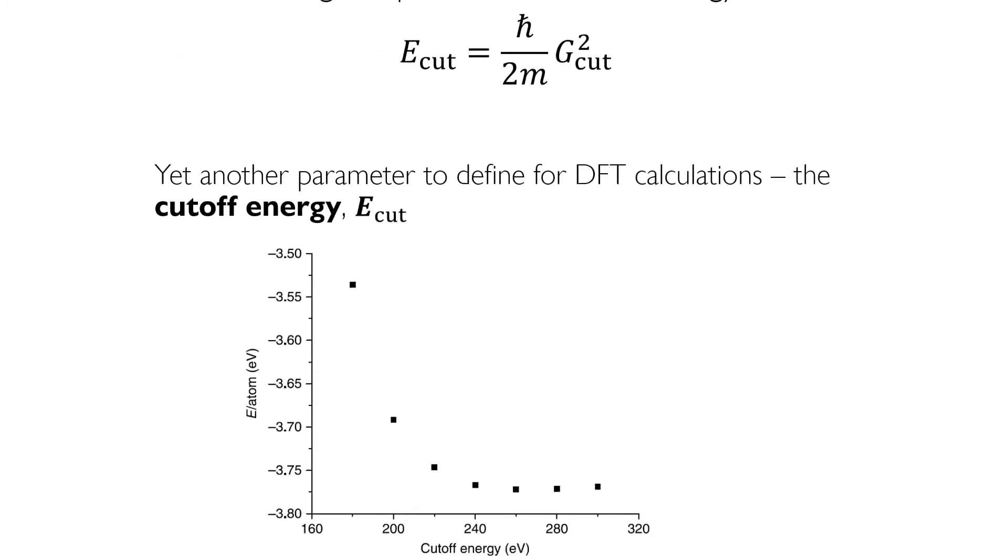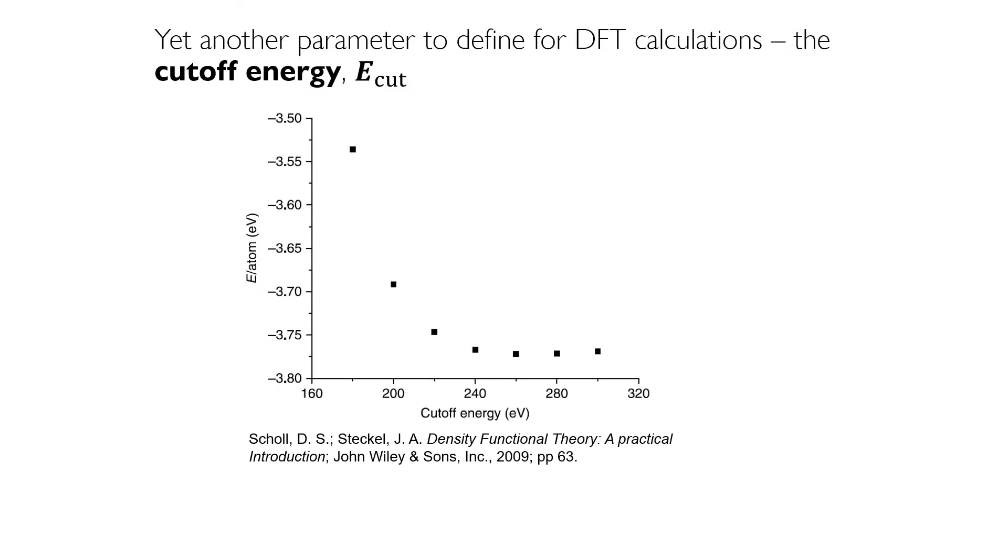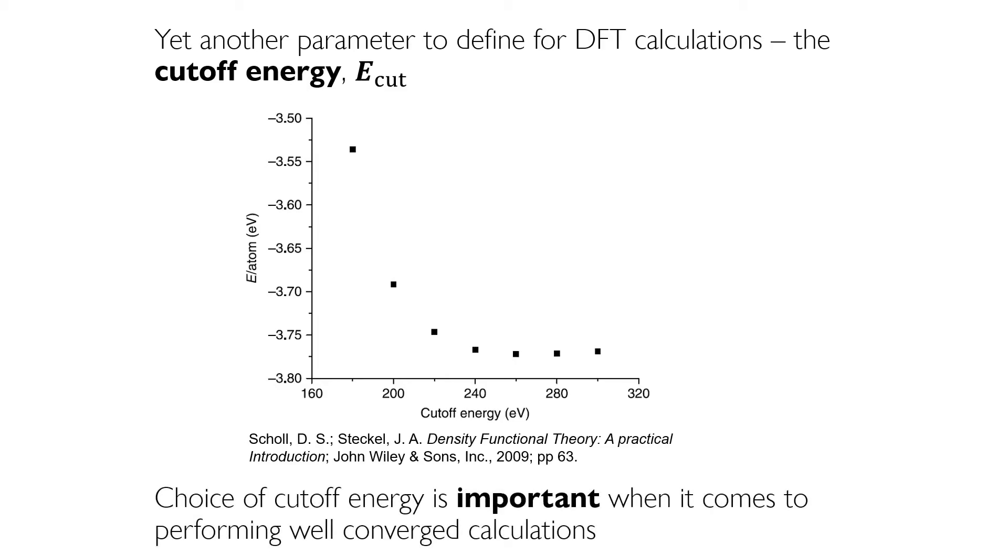This discussion has introduced yet another parameter that must be defined whenever you perform a DFT calculation, the cutoff energy E cut. Given here is a plot of how the energy per atom for copper in an FCC lattice converges as the cutoff energy in the DFT calculations is increased. These calculations were performed for bulk FCC copper with a lattice constant of 3.64 angstroms and using 12 by 12 by 12 k-points. As you can see, the choice of cutoff energy is an important parameter when it comes to performing well-converged calculations.